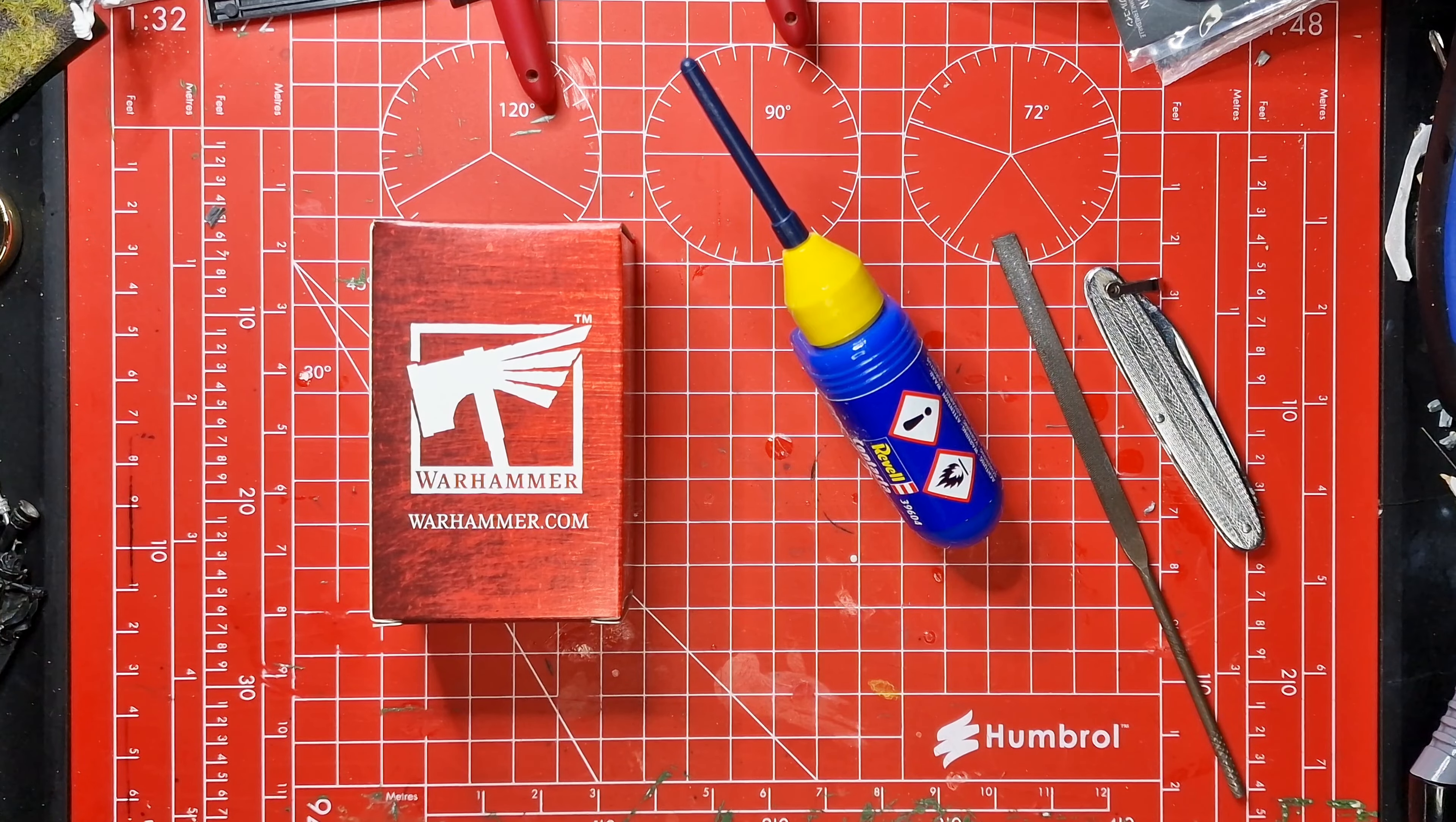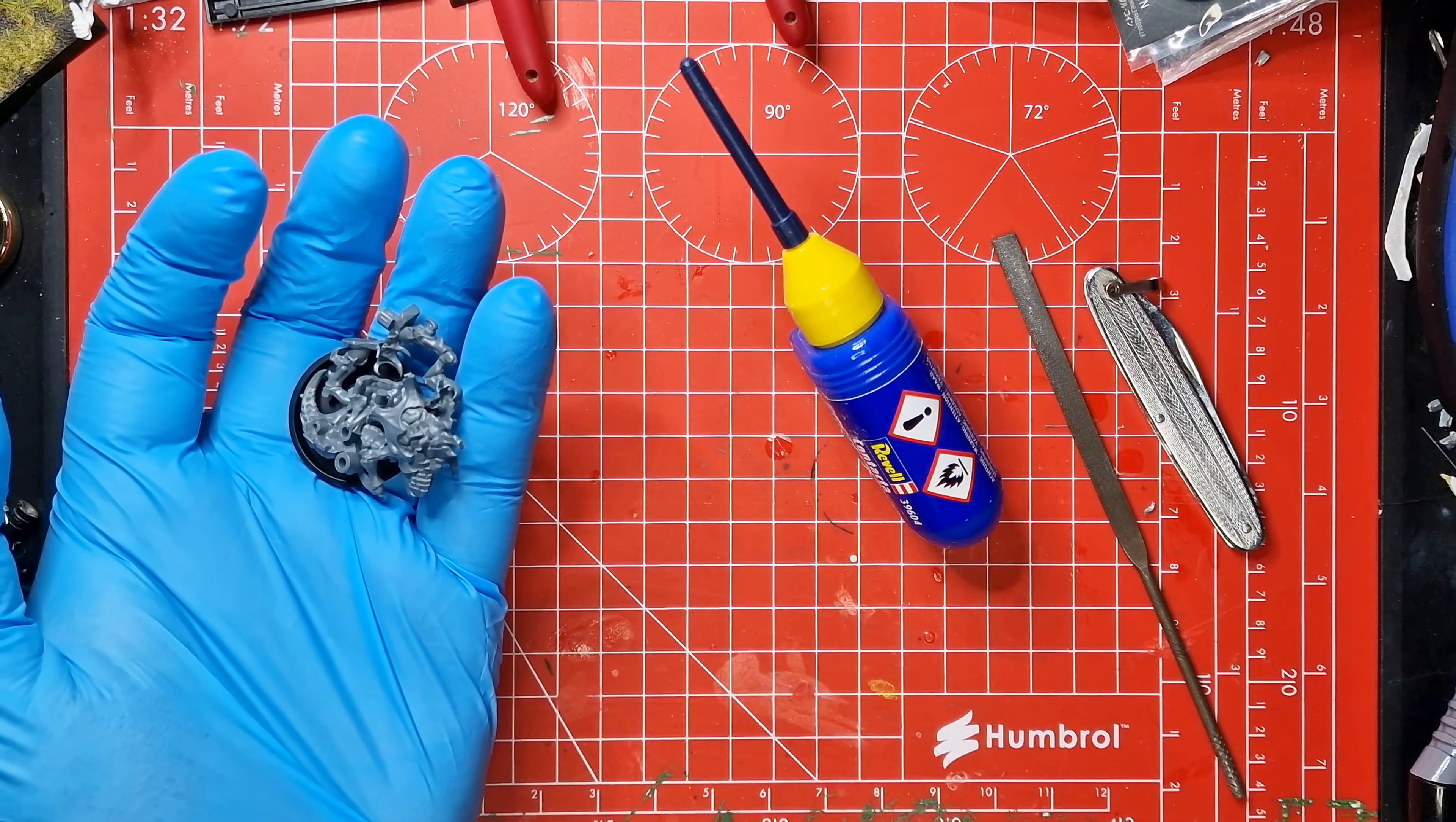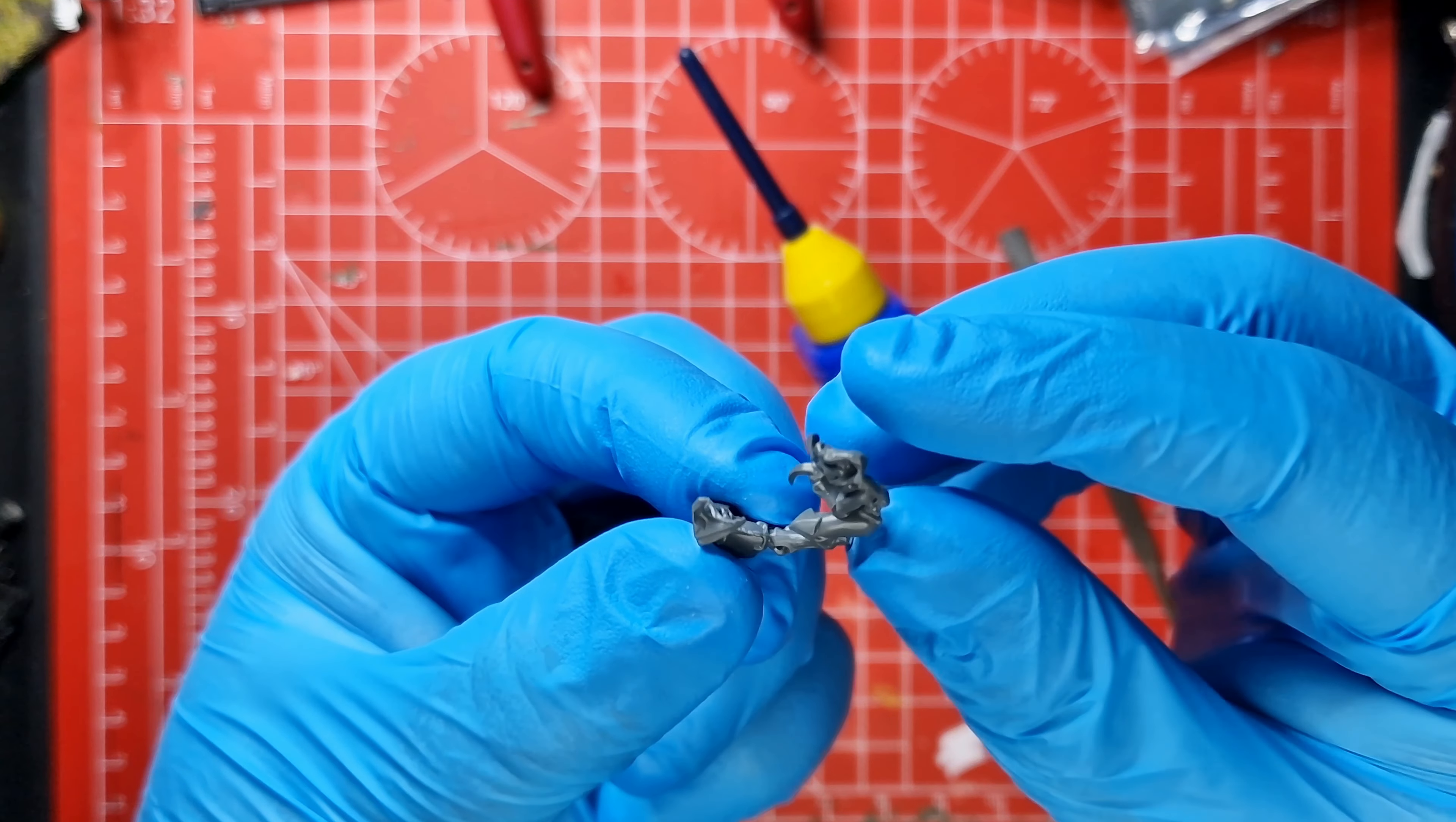So I've just popped down to my local store to pick up my free miniature of the month. It comes in this nice awesome little box here. And depending on the style, you may have to clip it out of a sprue. These ones came on one of ten little models, and the guy at my local store let me choose the one that I wanted. So I clipped it out in store and I've brought it home to come and build it.